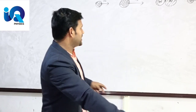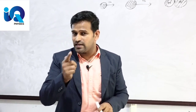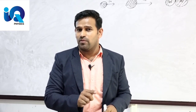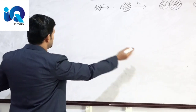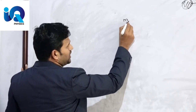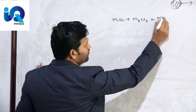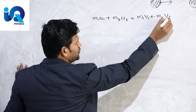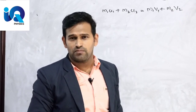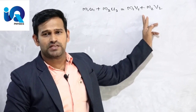We discuss momentum conservation in One Dimension. The sum of the total momentum before collision is equal to the sum of the total momentum after collision. Momentum conservation: M1U1 plus M2U2 equal to M1V1 plus M2V2.